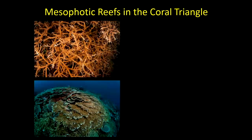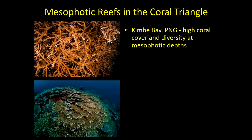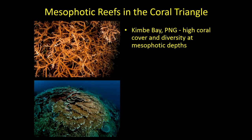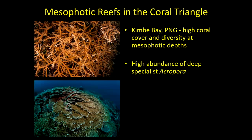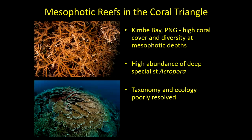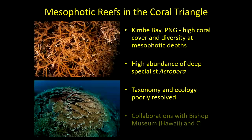Firstly, mesophotic reefs in the Coral Triangle. I have a couple of postgraduate students working in Kimbe Bay in Papua New Guinea as part of Jeff Jones's large research program there, and the coral diversity at mesophotic depths up there is really quite extraordinary. One of my students is working on describing that biodiversity but also the abundance of corals. Even when you get down to 40 to 50 metres in Kimbe Bay, coral abundance is exceptionally high - usually at least 40 to 50% coral cover - and there's a particularly high abundance of deep specialist Acroporas.